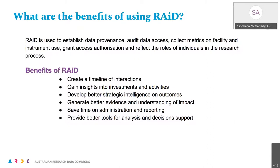What are the benefits of using RAID? RAID is used to establish data provenance. You can also use it for auditing, collecting metrics on facilities and instrument use, tying in grant access authorisation, and reflecting the roles of individuals in the research process. The benefits are that it can really help create a timeline of the interactions of your project, help you get insights into investments and activities, help make PID graphs rich, develop better strategic intelligence on outcomes, generate better evidence and understanding of impact — including funding impact, staffing impact, and research impact — save time on administration and reporting, and provide better tools for analysis and decision support.